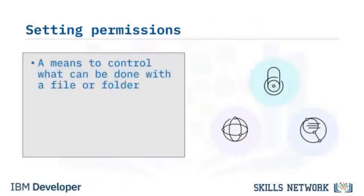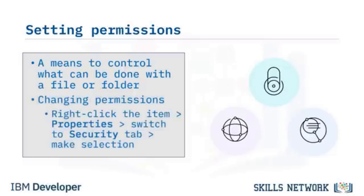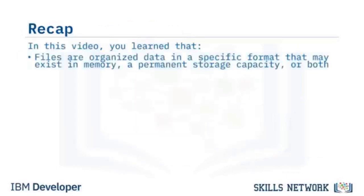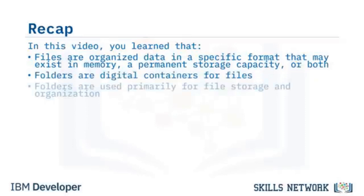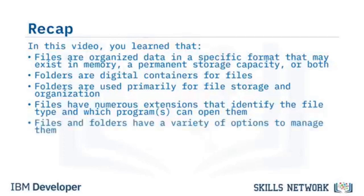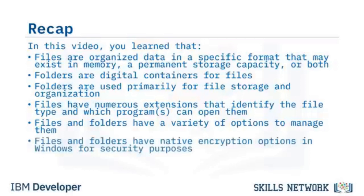You can use encryption on files and folders for security. Right-click the folder or file, select Properties, select Advanced, then under Compress or Encrypt Attributes check 'Encrypt Contents to Secure Data,' click OK and Apply. Setting permissions is another means to control what can be done with a file or folder — right-click any folder or file, select Properties, switch to the Security tab, and make your selection. In this video, you learned that files are organized data in a specific format, folders are digital containers for files, and files and folders have native encryption options in Windows for security purposes.